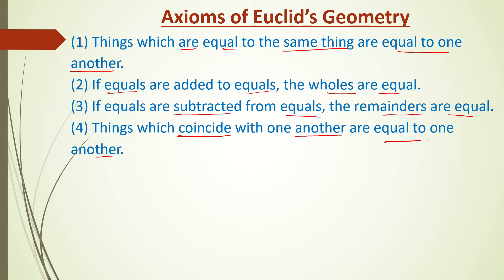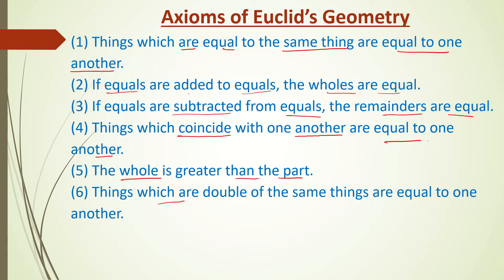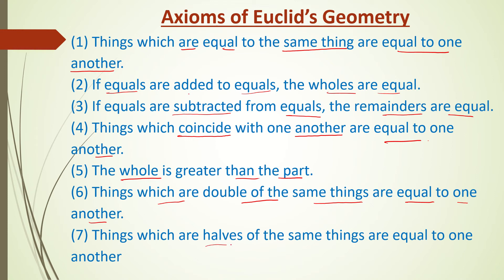If we take two circles of the same radius, they will coincide with each other and will be equal to one another. Fifth: the whole or complete thing is greater than the part - a part of a complete object is always smaller than the complete object. Sixth: things which are double of the same things are equal to one another. Seventh: things which are halves of the same things are equal to one another. Axioms six and seven are converses of each other.